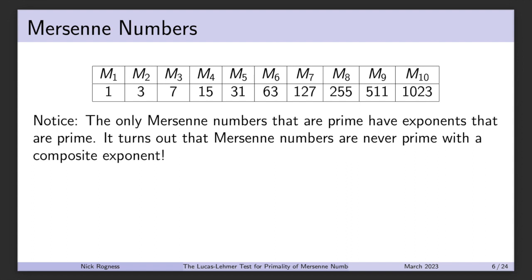Mersenne numbers are only prime if they have exponents that are prime. For example, M4 is 15 — both 4 and 15 are composite, since 4 is 2 squared and 15 is 3 times 5. Any Mersenne number with a composite exponent is also composite. However, having a prime exponent does not guarantee the Mersenne number is prime — just that any prime Mersenne number will have a prime exponent.